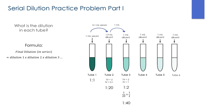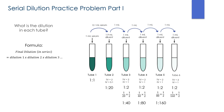Continuing the practice problem: tube 5 = 1:2 × 1:80 = 1:160. Tube 6 = 1:2 × 1:160 = 1:320. After adding 1 mL from tube 5 to tube 6, discard 1 mL from tube 6 to keep all tube volumes equal.